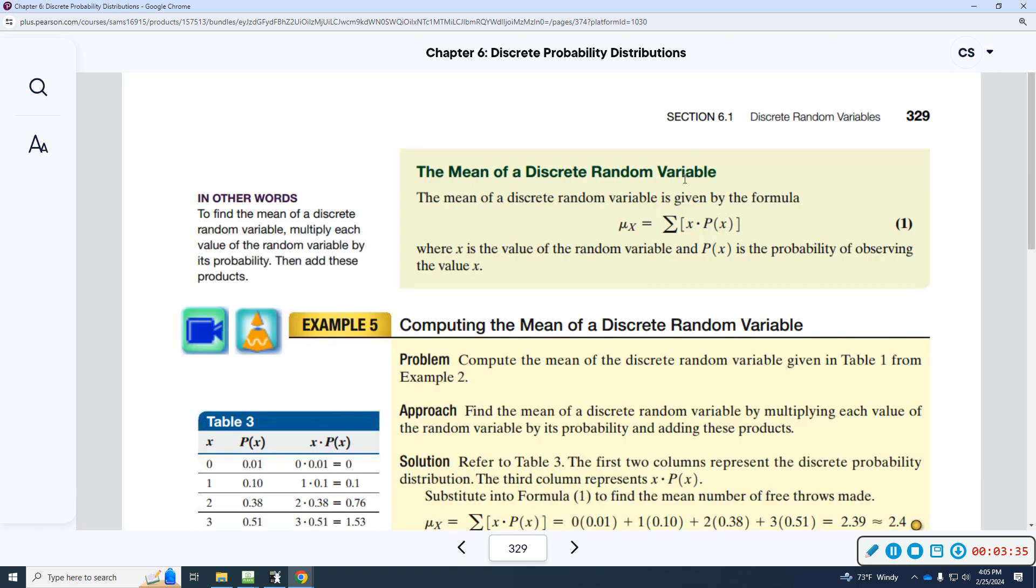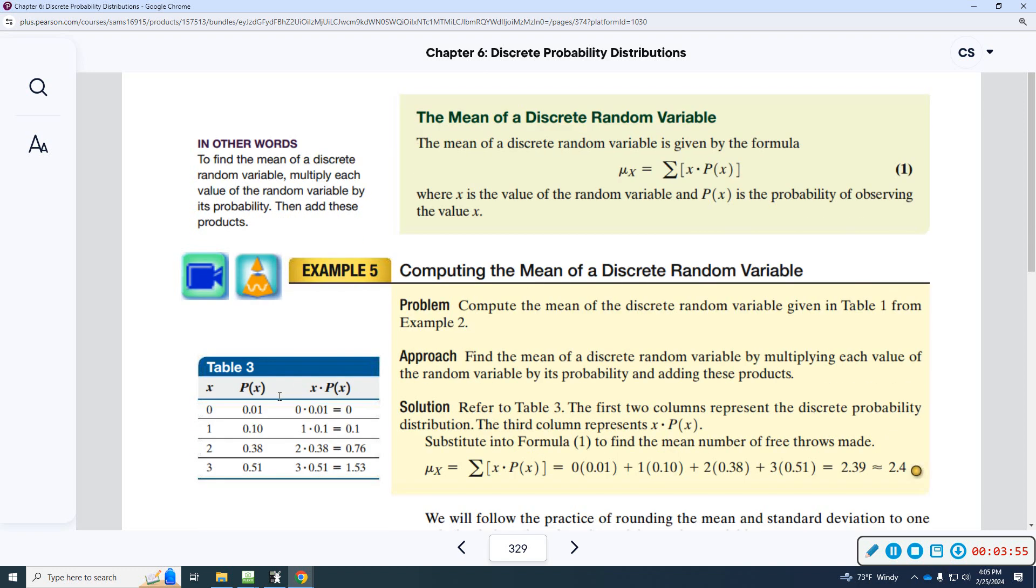So, when we talk about the mean of a discrete random variable, usually when probability, like if we talk about rolling a die, there's six sides. One through six, they all have the same chance of happening. However, there's a lot of probability scenarios where there's a different chance of things happening. Like this distribution, we have 0, 1, 2, 3. 0 has a 0.01. 1 has a 10% chance. 2 has a 38% chance. And 3 has a 51% chance. They all have a different probability of occurring.